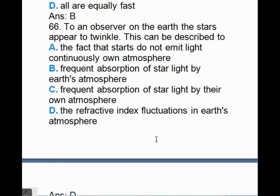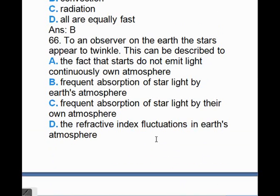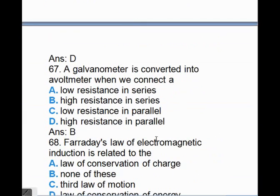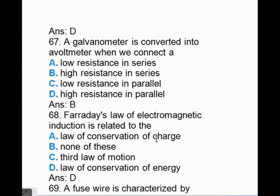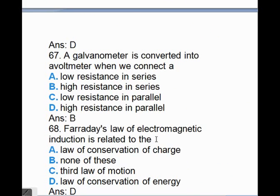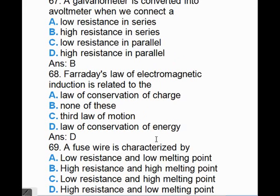To an observer on the earth, the stars appear to twinkle. This can be described to, answer is D, the refractive index fluctuation in Earth's atmosphere. A galvanometer is converted into a voltmeter when we connect a, answer is B, high resistance in series.